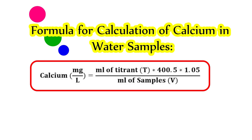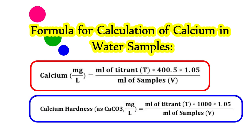Now let's move on to the formula used for calculation of calcium in any water samples. Calcium is expressed in mg per liter. If your study also requires finding the magnesium content, you have to carry out the calcium hardness calculation as well. The formula for calcium hardness is: ml of the titrant × 1000 × 1.05, divided by ml of the sample.